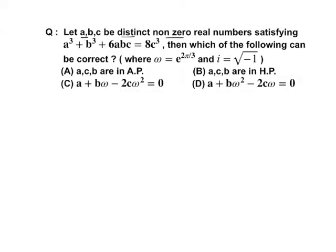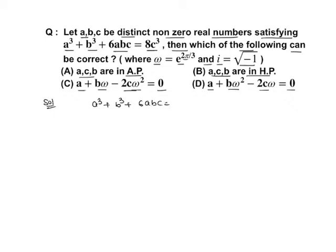The next problem: let a, b, c be distinct non-zero real numbers satisfying a³ + b³ + 6abc = 8c³. Which of the following can be correct, where ω = e^(2πi/3) and i = √(-1)? Options: (A) a, c, b are in AP; (B) a, c, b are in HP; (C) a + bω - 2cω² = 0; (D) a + bω² - 2cω = 0. We rewrite: a³ + b³ - 8c³ + 8c³ + 6abc = 0, then a³ + b³ + (-2c)³ - 3·a·b·(-2c) = 0.